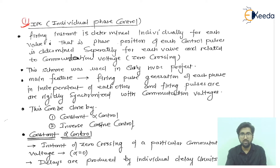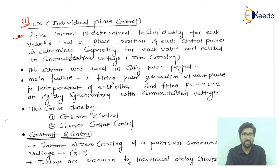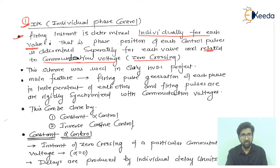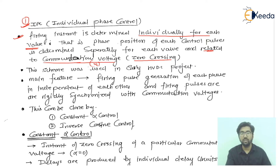Now we will talk about the IPC — Individual Phase Control. As the name suggests, we are individually controlling each and every phase. The first point is that the firing instant is determined individually for each valve, so we are using individual phase control. The phase position of each control pulse is determined separately for each valve and is related to the commutation voltage, which depends on the zero crossing. I will represent commutation voltage as Vc.